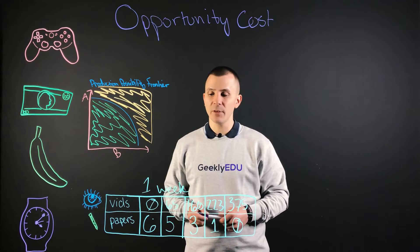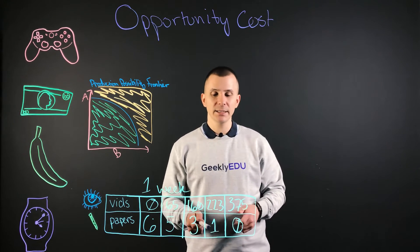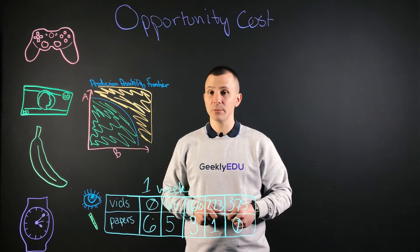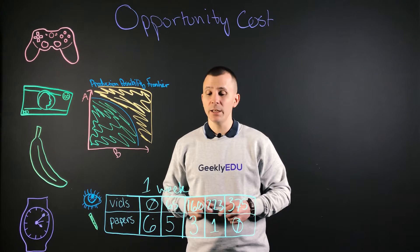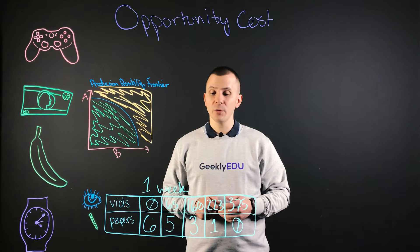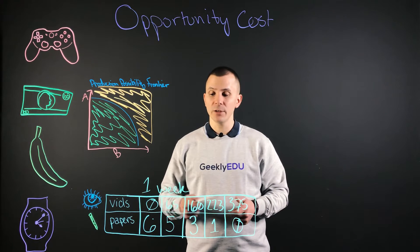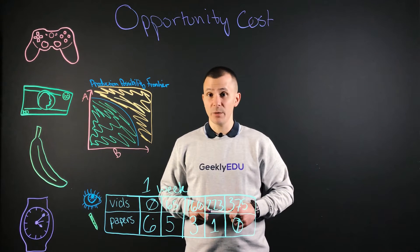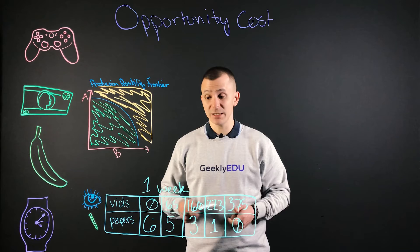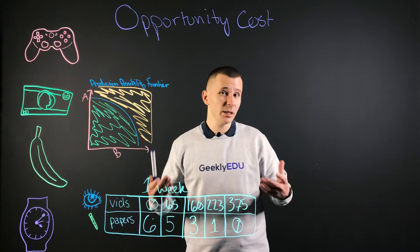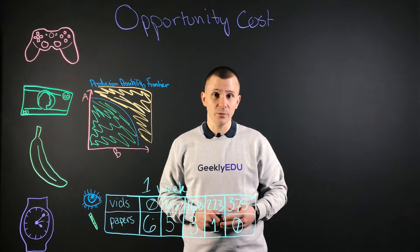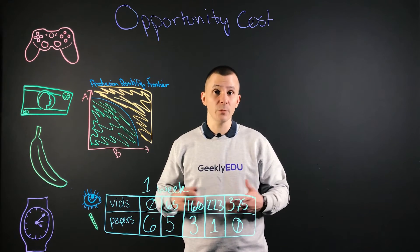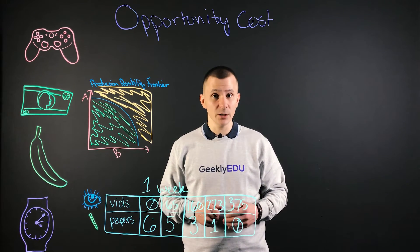Here in the middle, we have 160 videos versus three papers. So what are you really losing out on? Your opportunity cost in this case would be papers, because the videos aren't really contributing to your well-being or your production in general.